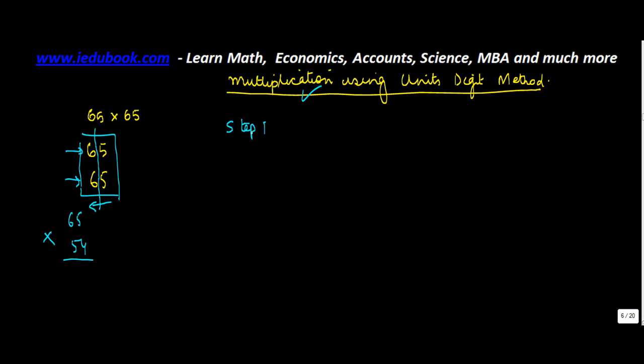Step one: write these as separate digits. You write 6, 5 and 6, 5 with a line between them.